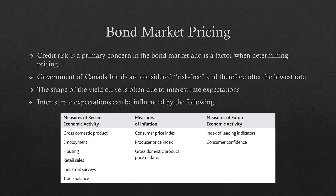Bond pricing also has a bit to do with the shape of the yield curve, which is often due to interest rate expectations. For example, you could have a five-year bond that you purchased offering five percent, and then if interest rates go up, now you can buy a five-year bond for six percent, so your five percent bond doesn't look as good and the price will fall.